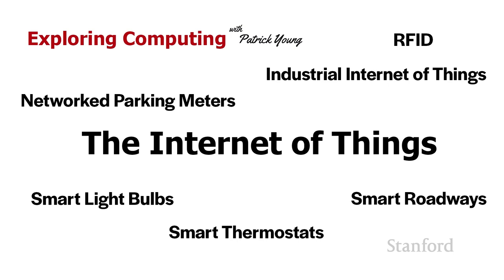As I suggested at the end of the last video, when we were talking about mesh, edge, and fog computing, more and more devices that are not thought of as traditional computing devices are being put onto the internet. This network of non-traditional computing devices is sometimes referred to as the internet of things.